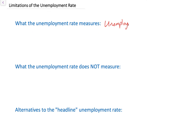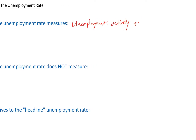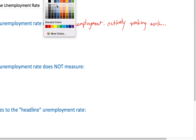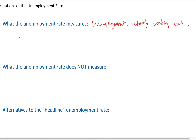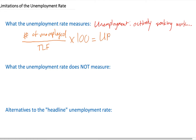Unemployment is simply defined as an individual who is actively seeking work but unable to find it. In order to be considered unemployed, an individual must have been seeking work in the last four weeks. So the unemployment rate is the percentage of people who are either employed or unemployed who are actively seeking work and unable to find a job.